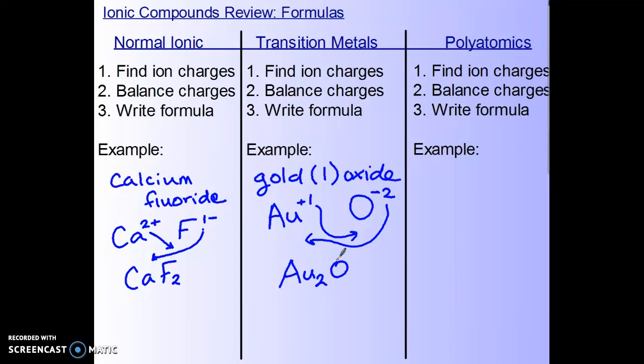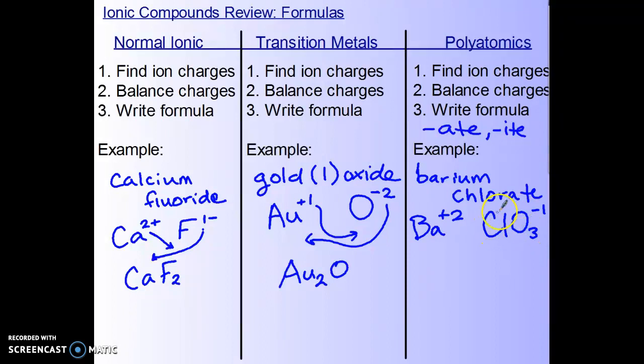When we get to polyatomics, if the name includes ate or ite, those are our common clues that it's a polyatomic ion in the name. If we had barium chlorate, barium is a metal that we know has a plus 2 charge because it's in group 2. Chlorate is a polyatomic ion that you would have to find on the back of your periodic table. It's not just chlorine. It's ClO3, I believe, with a negative 1 charge. So if chlorate has a negative 1 charge, we need 2 chlorates to balance out this plus 2 from the barium. We can get the same thing by crisscrossing.